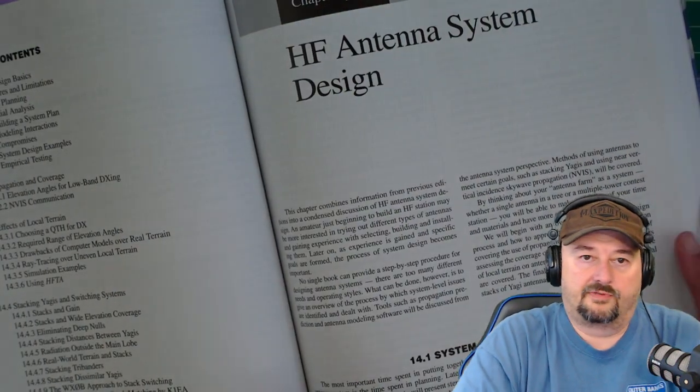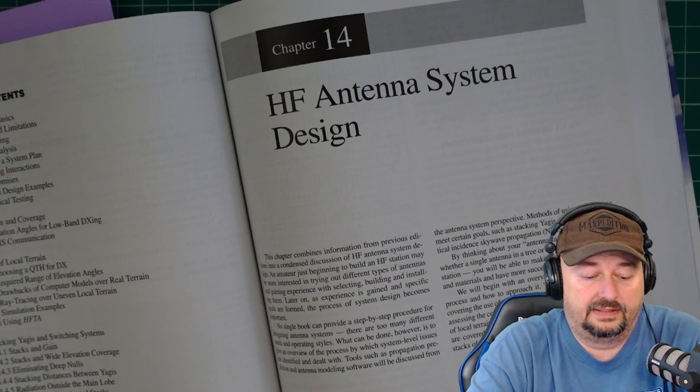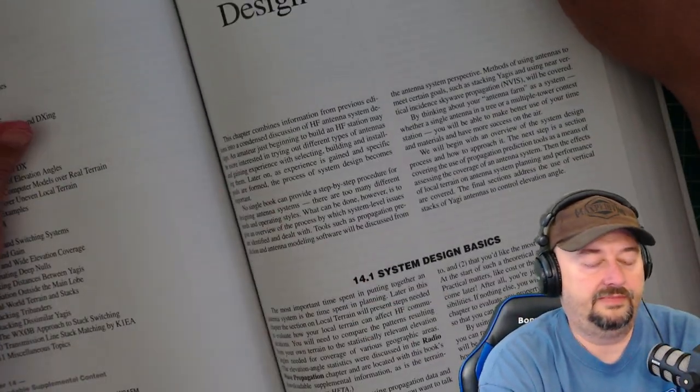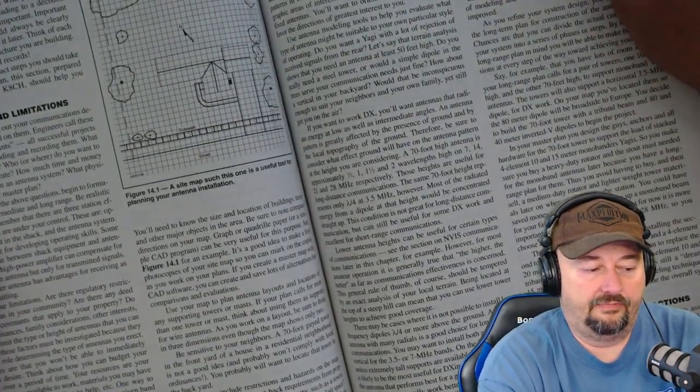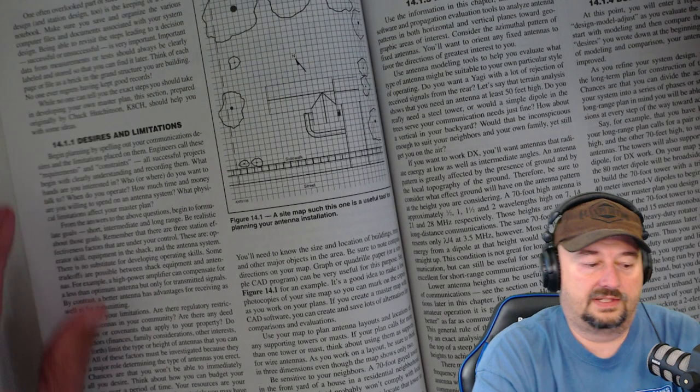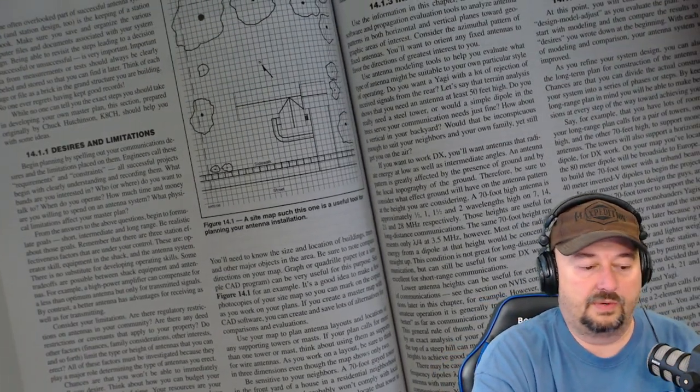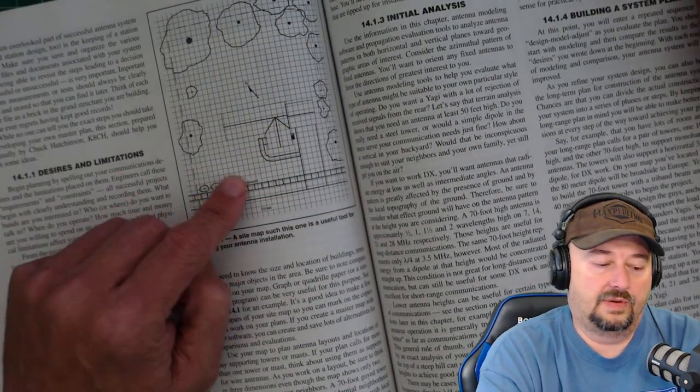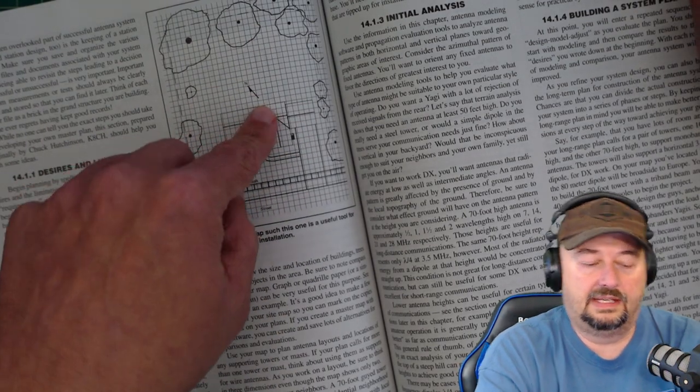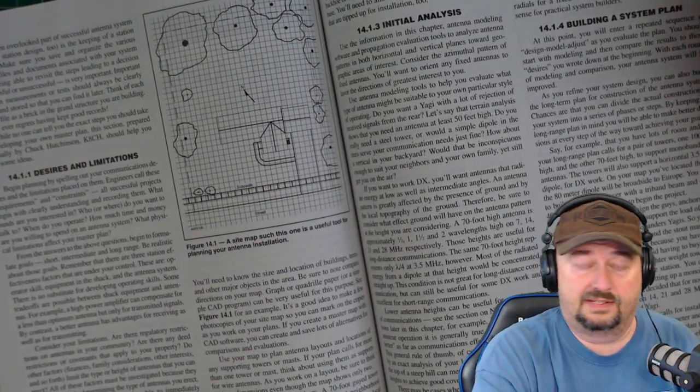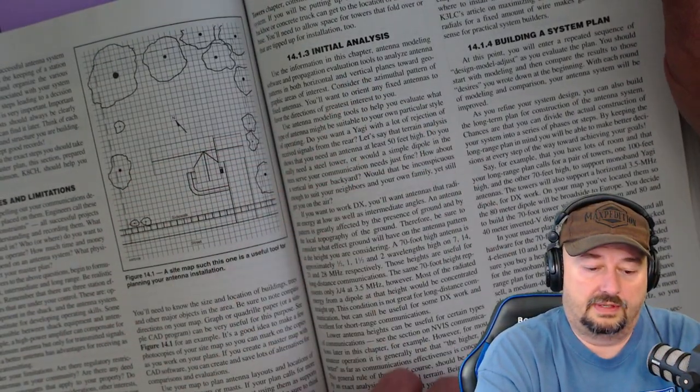Here's a pretty cool chapter, chapter 14. And it is really around HF antenna system design. And then it starts off with some design basics. And it kind of walks through how you would design an antenna system based off of things like, here's desires and limitations. So that would be how you want to use your antenna, what bands you want to operate on, making a diagram of your location, so you would understand any impacts of anything in your near field, for example, like swing sets or campers and things like that. It goes through the case of building a plan.